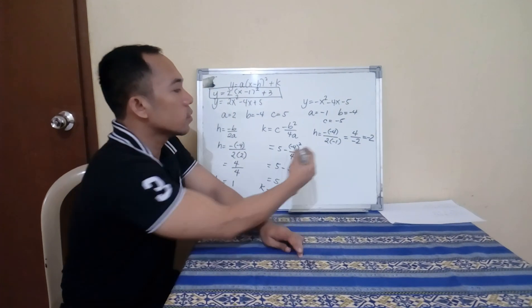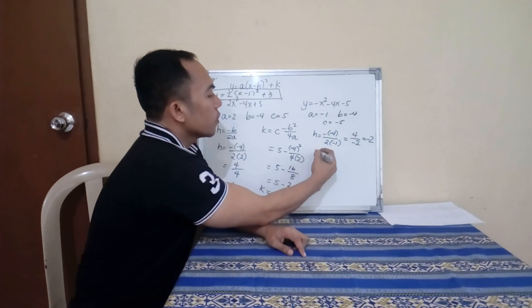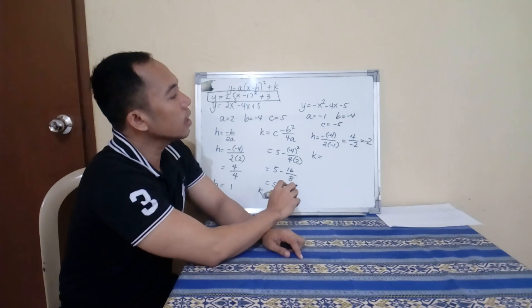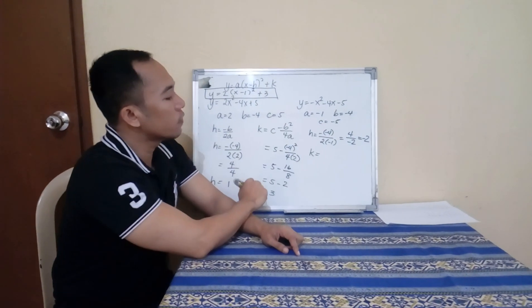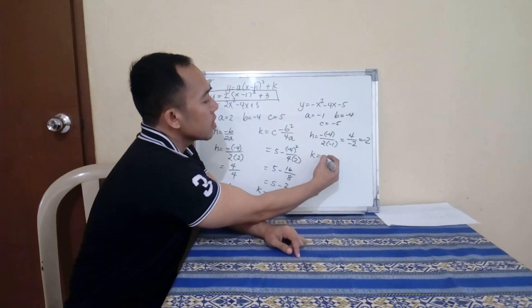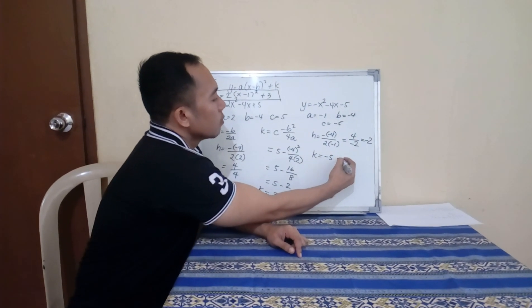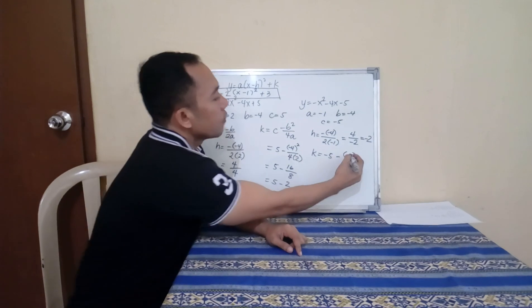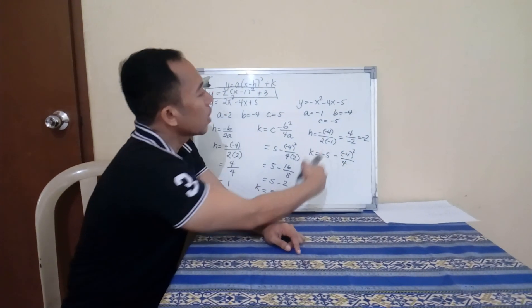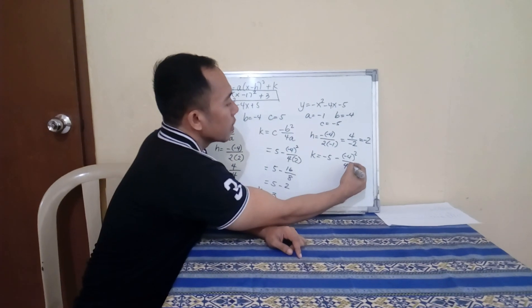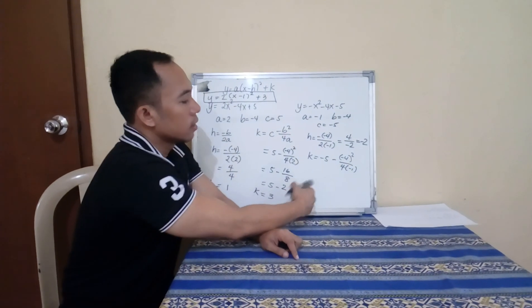And then for K, K is C minus B squared over 4A. Our C here is negative 5, minus our B is negative 4 squared, over 4 times our A which is negative 1.